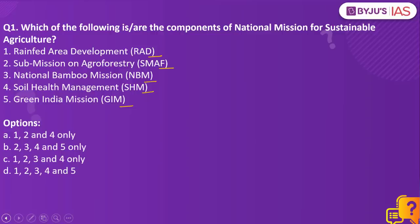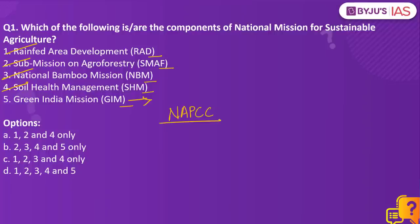Coming back to our question: Rainfed Area Development is a component under this mission. Submission on Agroforestry is also a component, as is National Bamboo Mission and Soil Health Management. However, Green India Mission is not a component of National Mission for Sustainable Agriculture — it is one of the separate missions under the National Action Plan for Climate Change. The task for you today is to list all missions under NAPCC in the comments. The right answer is 1, 2, 3 and 4 only, which is Option C.